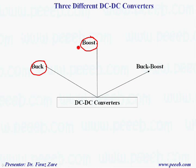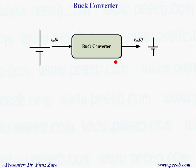In this lecture, we consider buck converters, boost converters, and buck-boost converters, looking at continuous and discontinuous conduction modes for these converters. Let's start with the buck converter. Basically, in a buck converter the input voltage is almost greater than or equal to the output voltage. So the main aim is to regulate the output voltage and also reduce the magnitude.